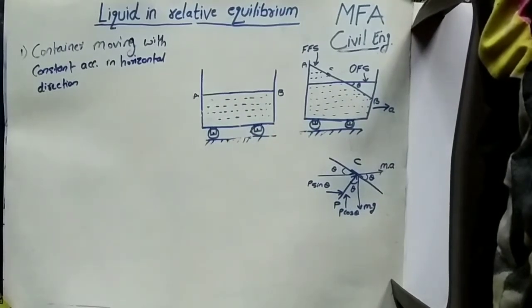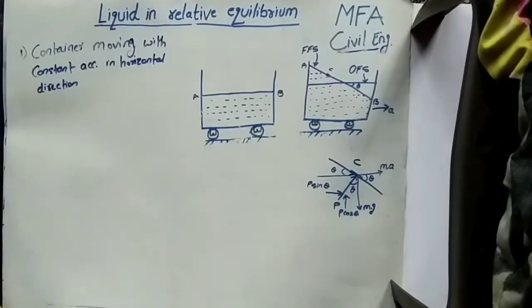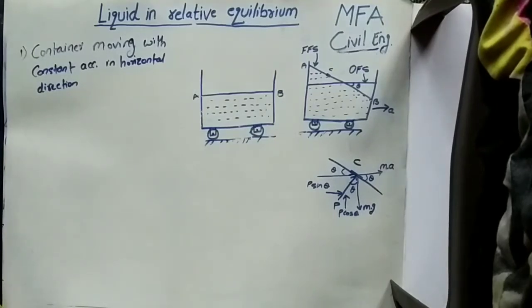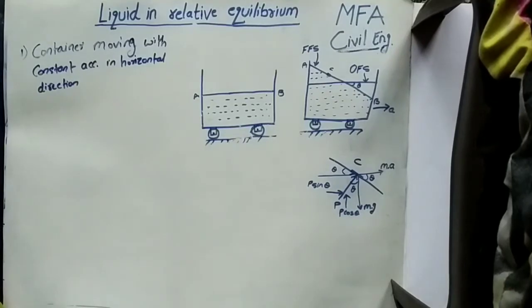Depending on the direction of the acceleration, there are two cases. The first case is the container moving with constant acceleration in a horizontal direction, and the second case is the container moving with constant acceleration in a vertical direction. Let's understand each case one by one.